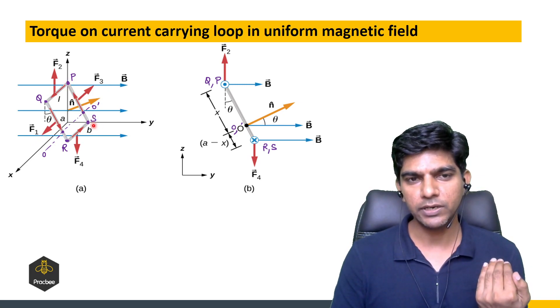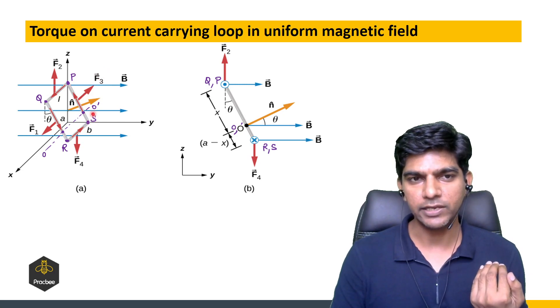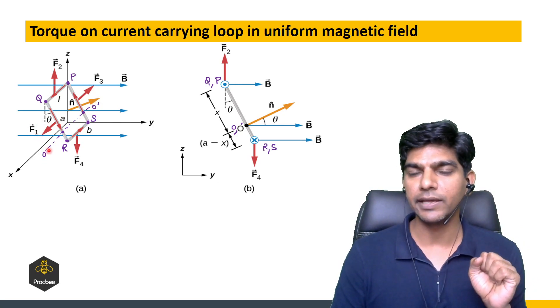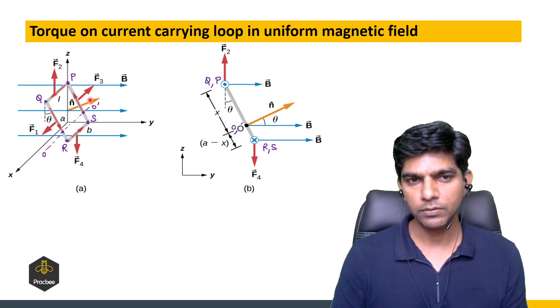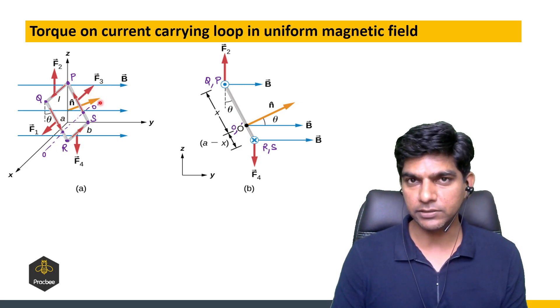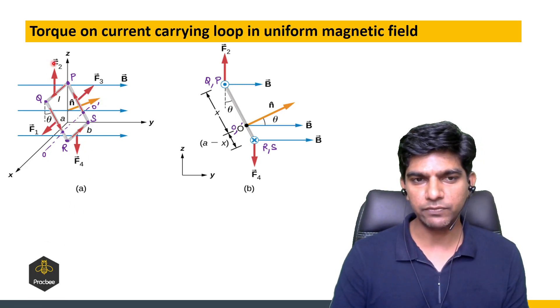SP has force in the negative z direction. If you see, the torque of F1 and F3 about the axis of rotation is zero, because these forces are parallel to the axis. Now we are left with only these two forces F2 and F4.